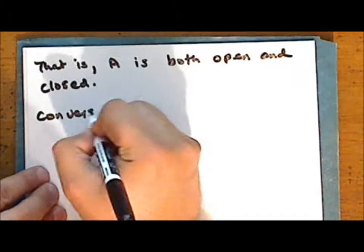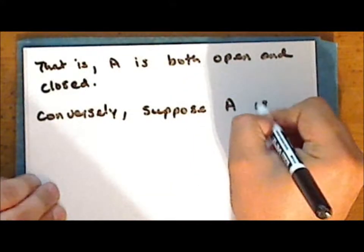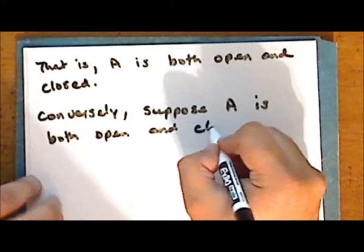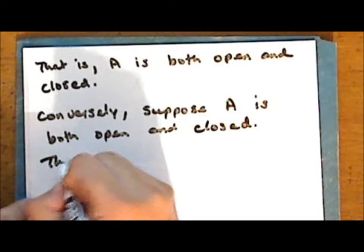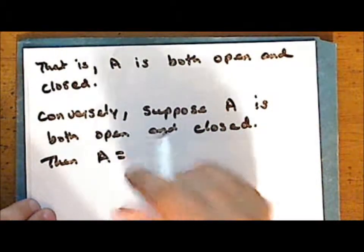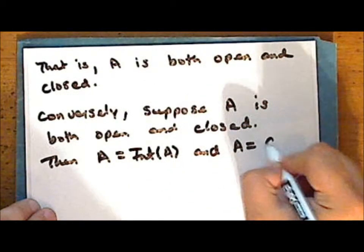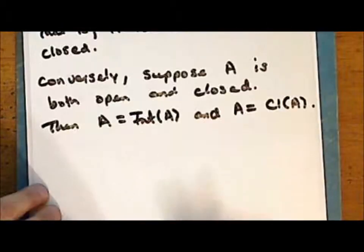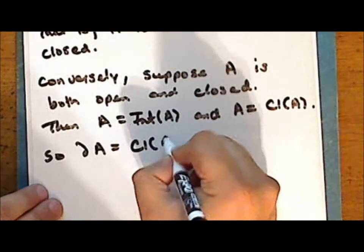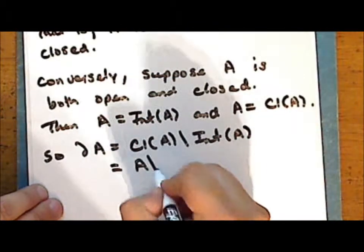Conversely, suppose that A is both open and closed. Since A is open, it equals its interior. Since A is closed, it equals its closure. Therefore, the boundary of A, which is the closure of A set minus the interior of A, is the complement of A in itself, which is the empty set.